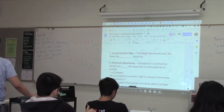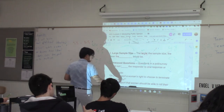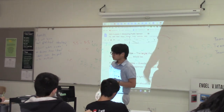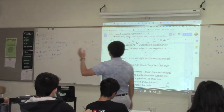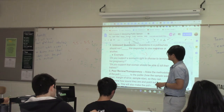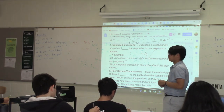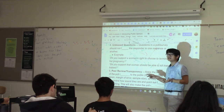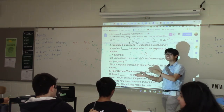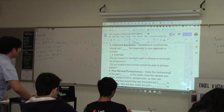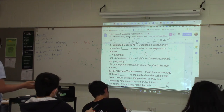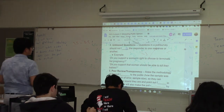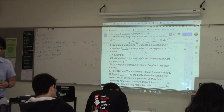Another key is asking unbiased questions. Pollsters spend a lot of time thinking about the questions they ask, because it's important not to lead the responder one way or another. For example, asking about abortion as 'Do you support that women should be able to kill their babies?' versus 'Do you support a woman's right to choose to terminate her pregnancy?' — the second framing would lead responders to answer no. That is a biased question, and it skews your results. Questions in a poll survey should not lead the responder to one response or another — keep the question neutral for accurate results.